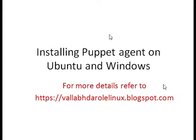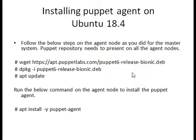Hello friends, let's continue with Puppet. In this session we are going to learn how to install the Puppet agent on Ubuntu and Windows servers. Before starting, let's begin with Ubuntu servers. The process involves: downloading the repository, installing the repository, updating it, and then installing the Puppet agent.